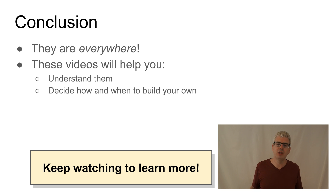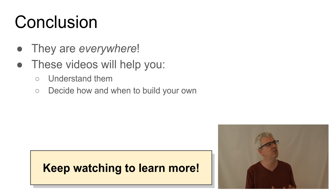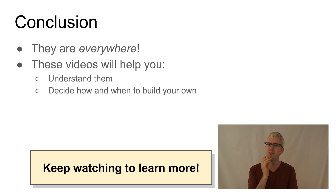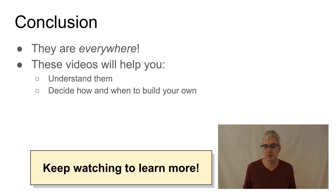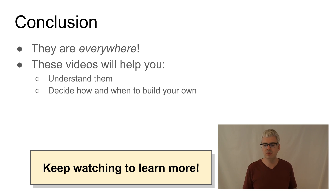Once you start looking for distributed systems, you start seeing them everywhere. I was trying to think of good examples and started thinking: is the US electoral voting system really just an example of distributed consensus with Byzantine fault tolerance? Okay, I've taken things too far — I get really excited about distributed systems. I've spent the past 10 years, ever since getting my PhD, working in industry on distributed systems, trying to make them more scalable, faster, and easier to use. What I'm hoping to do with this series of videos is make them easier to understand, so that by the end you'll know how and when to build your own distributed systems.